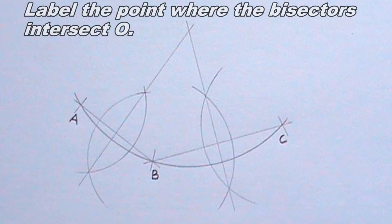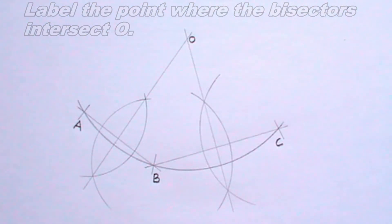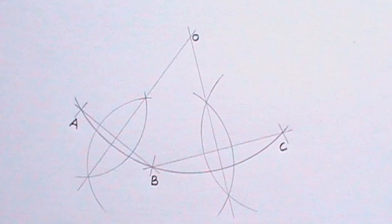I will label the point where the bisectors intersect, O. Point O is the center of the arc.